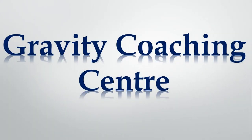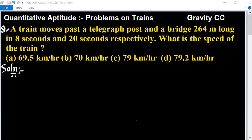Welcome to our channel, Gravity Coaching Center. Quantitative Aptitude Chapter: Problems on Trains. A train moves past a telegraph post and a bridge 264 meters long in 8 seconds and 20 seconds respectively. What is the speed of the train?